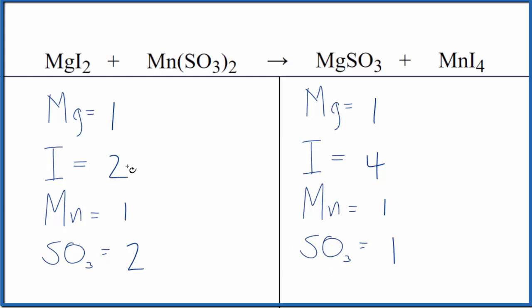Why don't we first start off by doubling the MgI2? That way we'll have two times two for the iodine. That'll give us four. Those will be balanced, and then one for the magnesium. That gives us two of those.